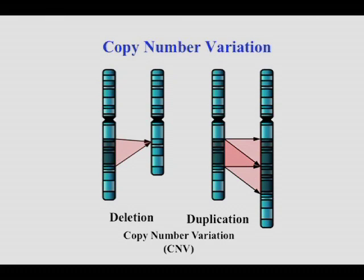Copy number variation belongs to a general type of genetic variation called structural variation, in which you have dosage imbalances in the DNA. Copy number variation was long appreciated in cancer genetics before human geneticists applied it to germline disease. In the simplest form, we're talking about losses or gains of pieces of DNA — we call those deletions or duplications — and I'll use the term CNV to refer to both deletions and duplications.